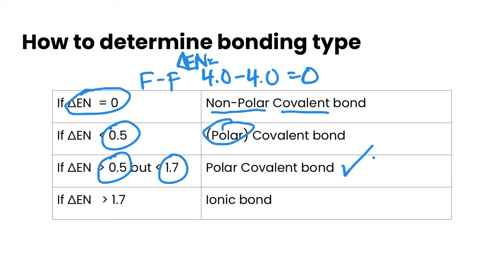So that's the case for HCl, for example. If we did that, remember the electronegativity of chlorine was 3.0, for hydrogen 2.1. So if we did the difference there, it's 0.9, which fits into this category.